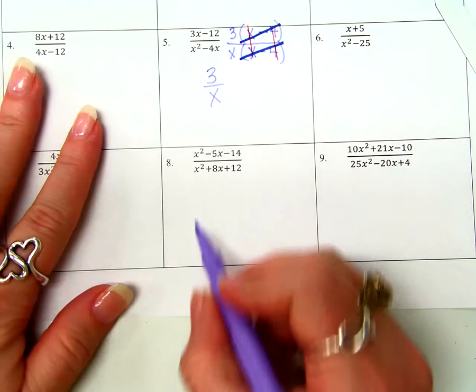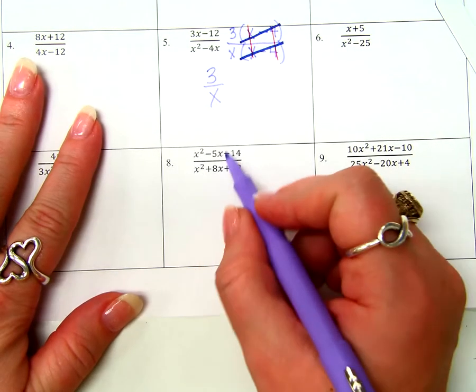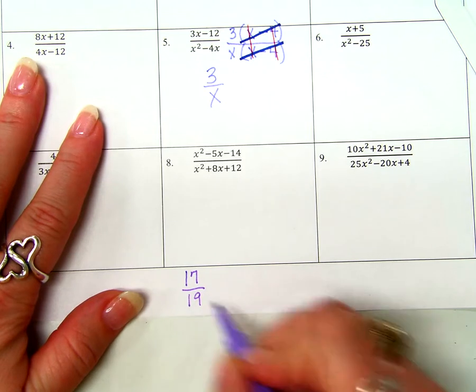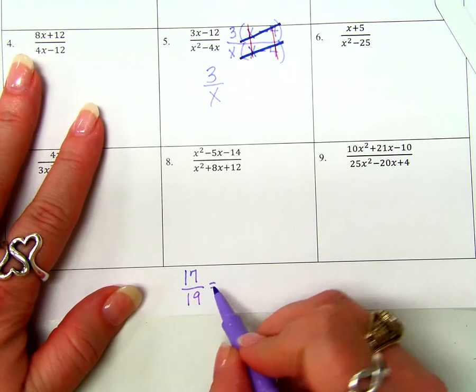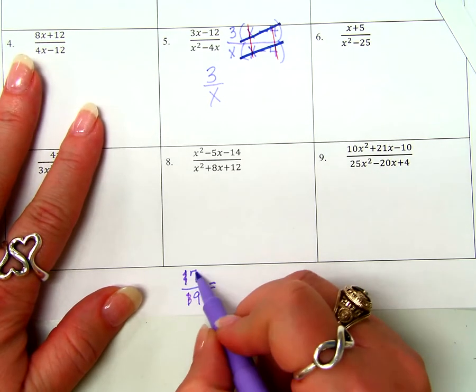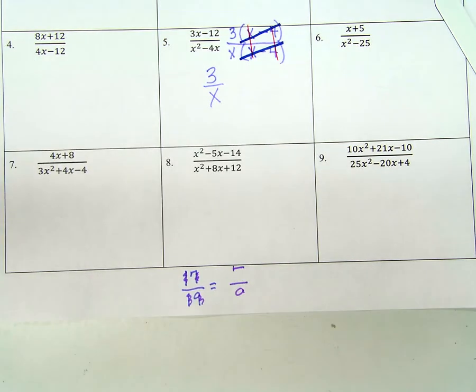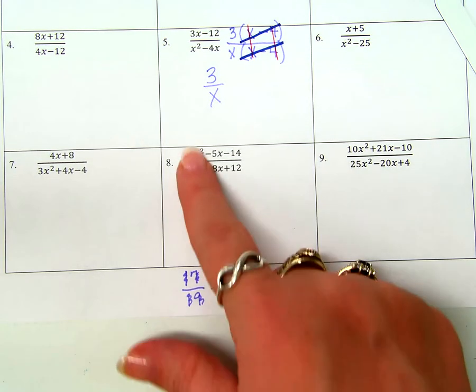Why is the answer not 2X plus 5? Because it's in the denominator. What is left in the numerator when I cancel my 3? A 1. So my answer is 1 over 2X plus 5. Does that really make such a big difference? Oh yes, it does. You're correct. Okay?